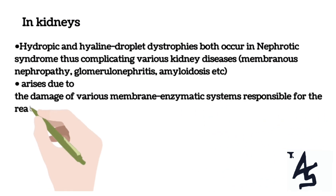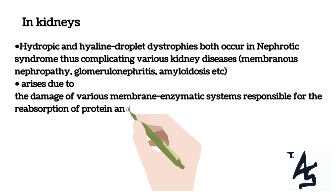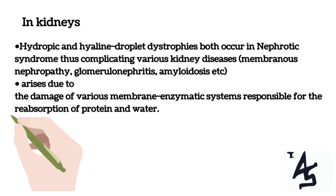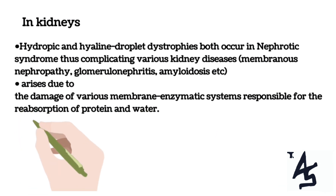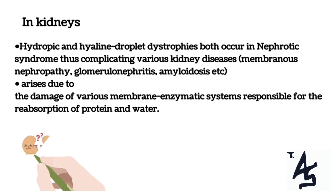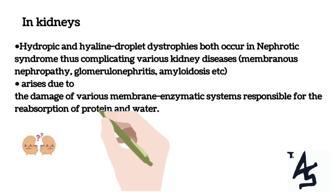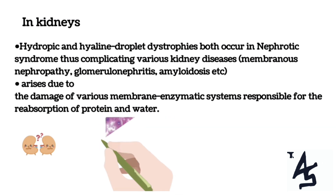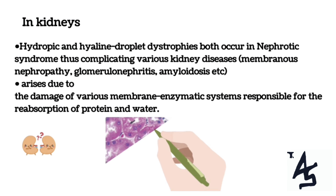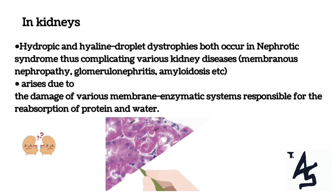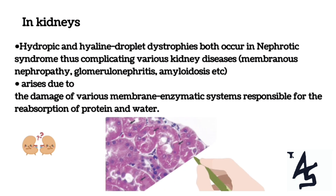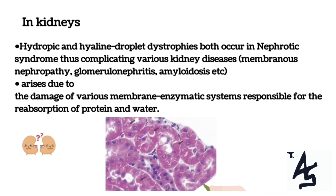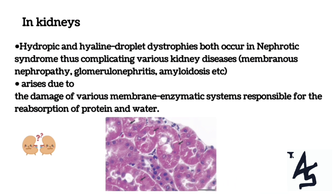A point to note here is that hyaline droplet dystrophy of nephrocytes is associated with infiltration mechanism, which causes increased permeability of glomerular filtrate and subsequent decomposition. This causes disruption of the vacuolar or lysosomal apparatus of nephrocytes that provide protein reabsorption. Whereas hydropic dystrophy of nephrocytes is the result of infiltration and decomposition mechanisms of another reabsorption system — the basal labyrinth, which works on sodium-dependent ATPases and provides sodium and water reabsorption.